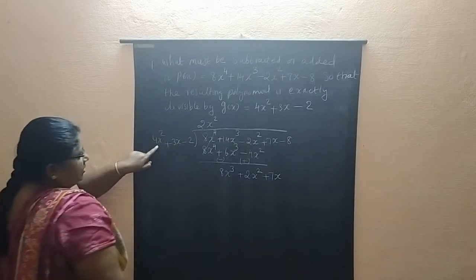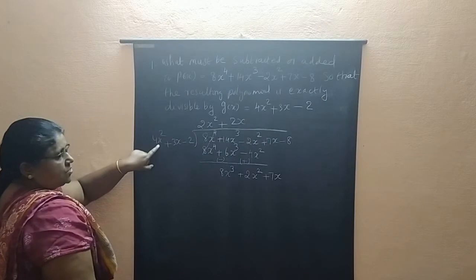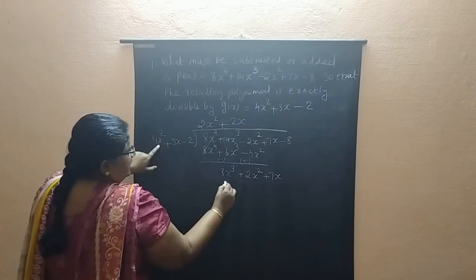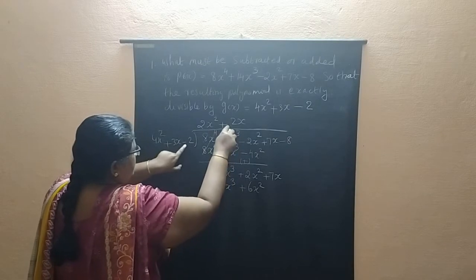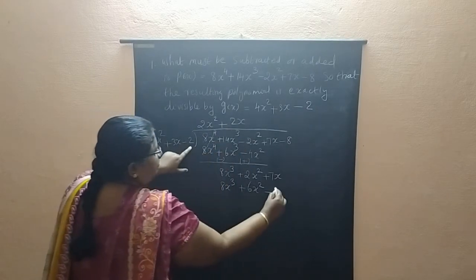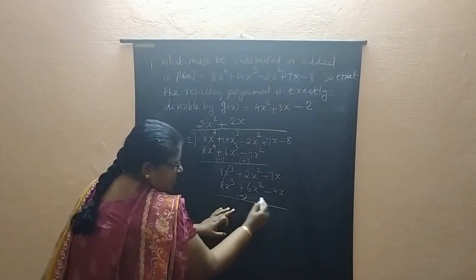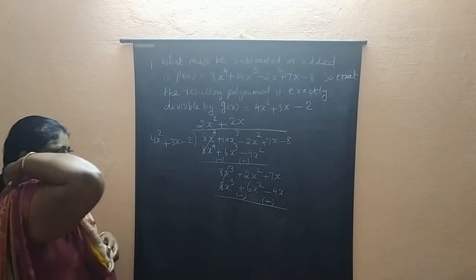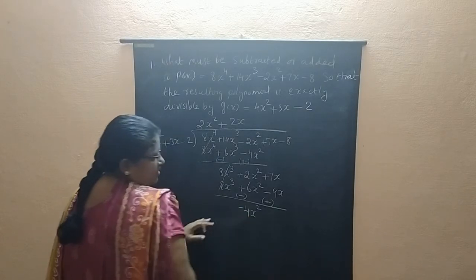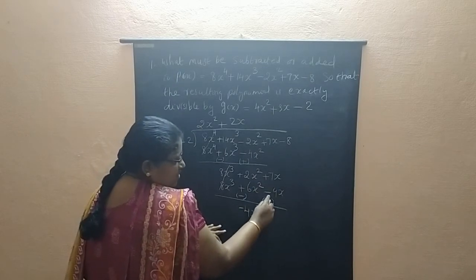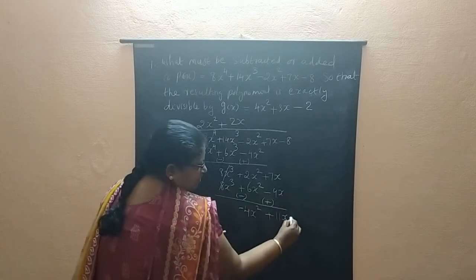Then 8X cube divided into 4X square, 8 by 4 again it is 2, X cube by X square is X. So answer is 2X. 2X into 4X square is 8X cube, 2 into 3 is 6X square. Positive into negative, negative. 2 into 2 is 4X. Subtraction. This we can cancel. Positive become minus, negative become positive. Now it is positive 2, it is negative 6, so answer is negative 4X square. It is positive 7, it is positive 4, 7 plus 4 is 11X. Next term take it down.